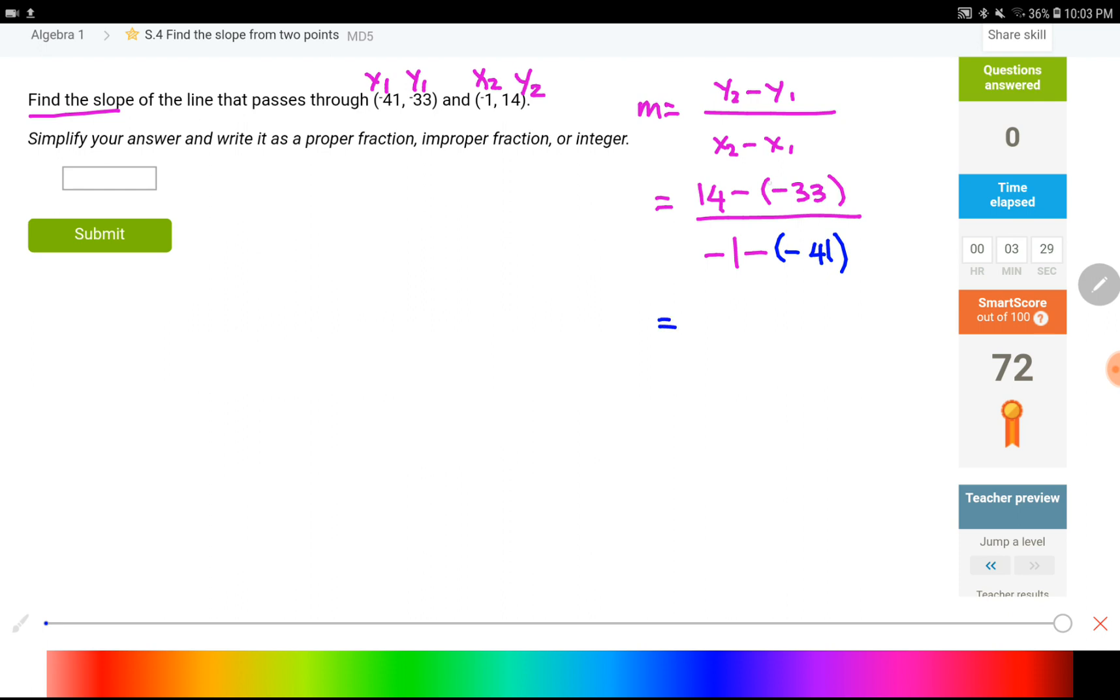Now, we have two negatives at the top, sitting next to each other. That means, we are going to add 14 and 33. When we add these two numbers, it is 47. The sign is positive. 14 minus negative 33 is 47. Negative 1 minus negative 41, that's going to become positive 40. There's no number that you can simplify, you can divide both of these by.